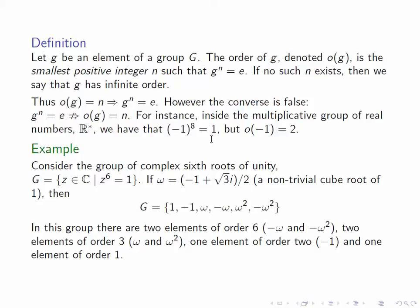In this group we can see that there are two elements of order 6, minus omega and minus omega squared, two elements of order 3, omega and omega squared, one element of order 2, minus 1, and of course there's also an element of order 1, the identity.